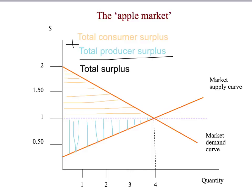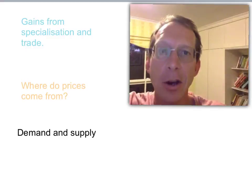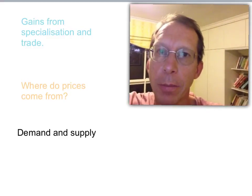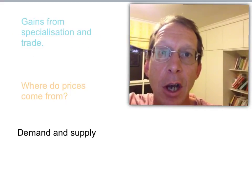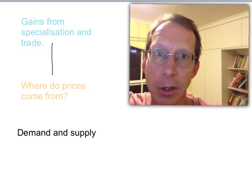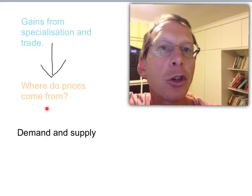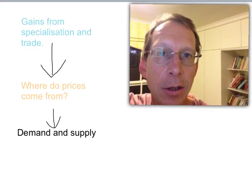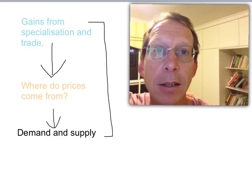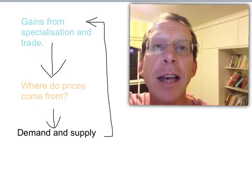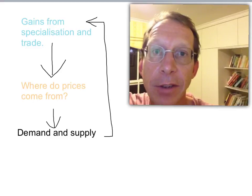You could work out the size of this total surplus triangle and the total benefits to the economy of having people buy and sell apples every day. Notice we've now come full circle: we started with Tom and Becky's gains from trade in tomatoes and potatoes, asked where prices come from using demand and supply, and now we've used demand and supply to measure the gains from trade in the apple market. The next step is to ask how those gains from trade change when we introduce government policy — but that's for next time. Thanks.